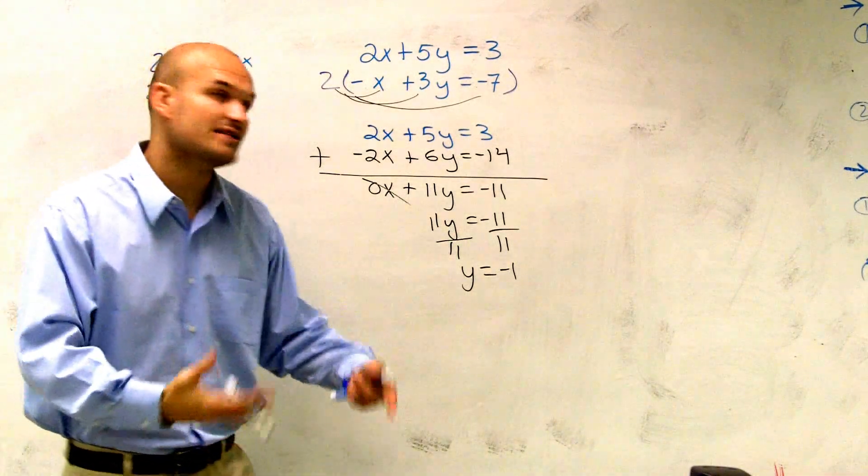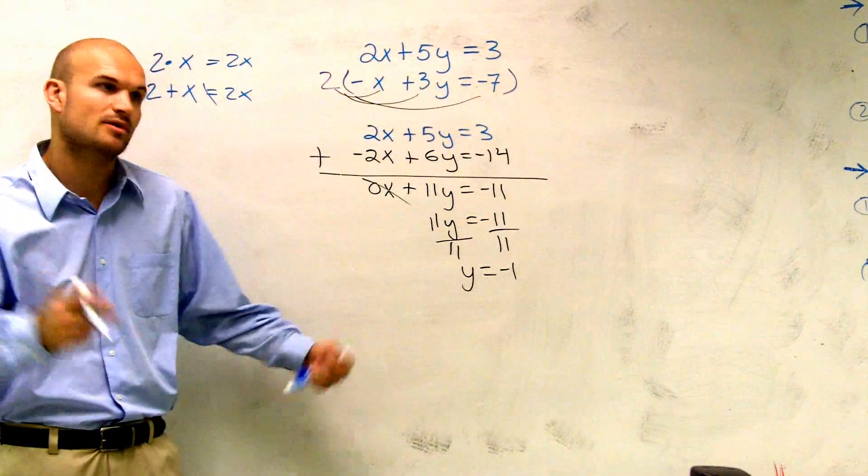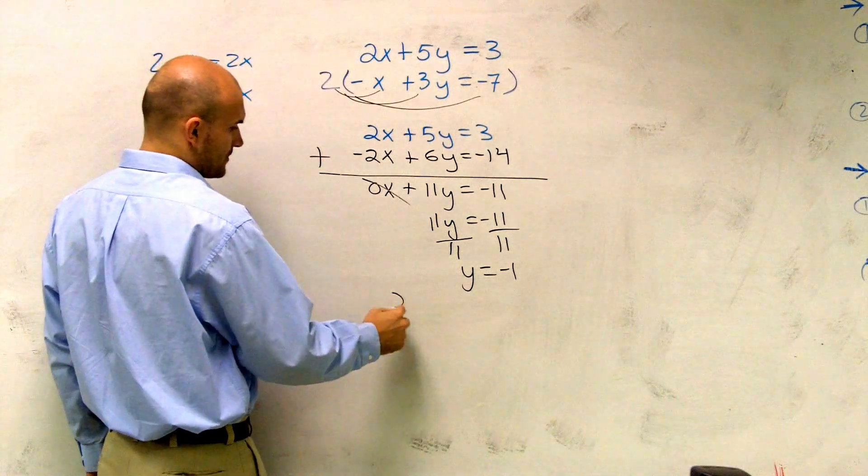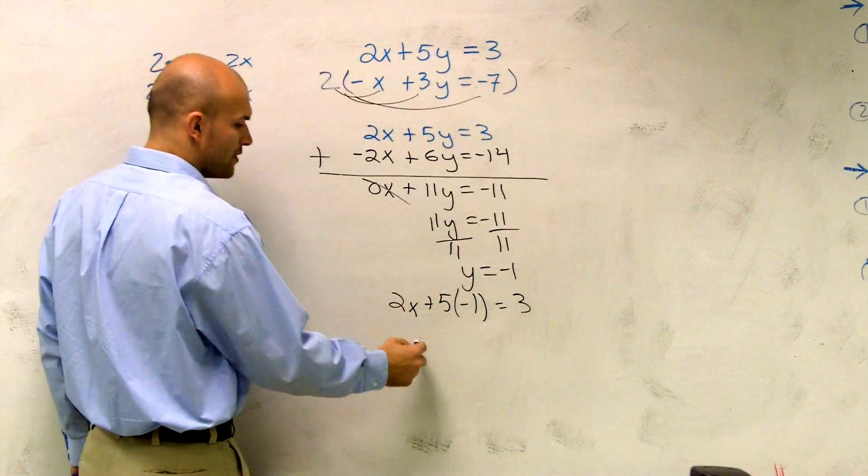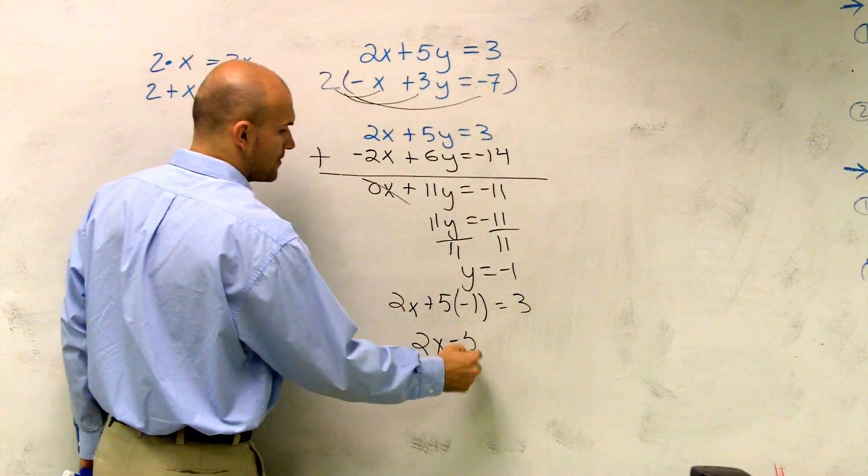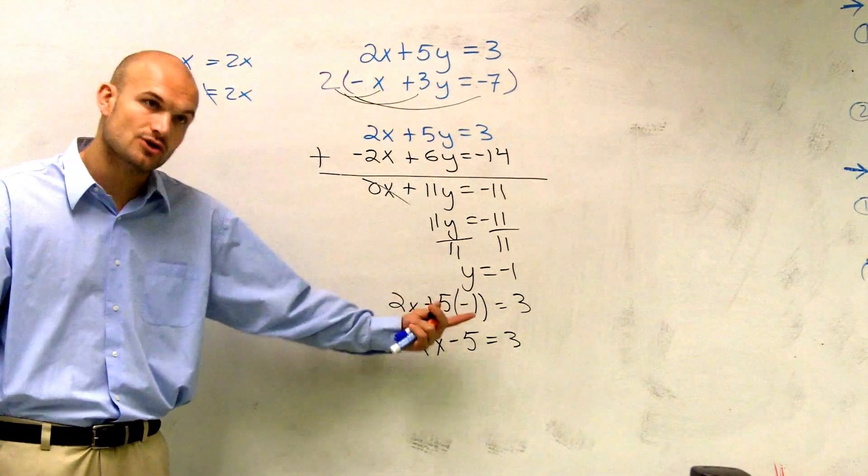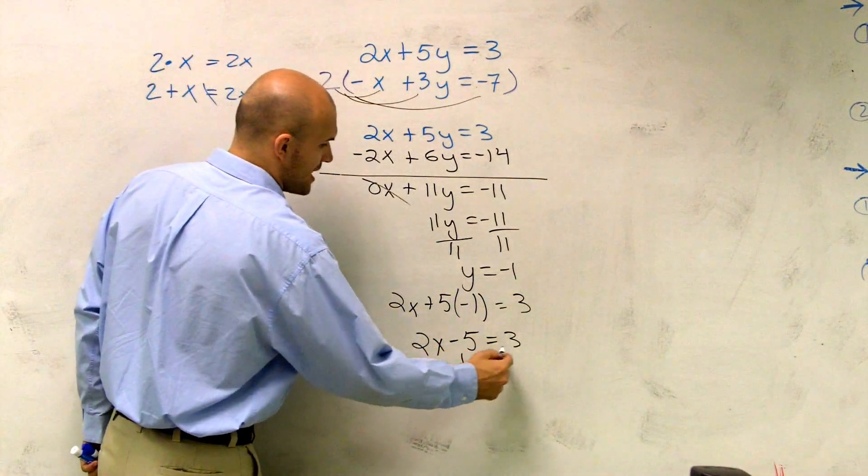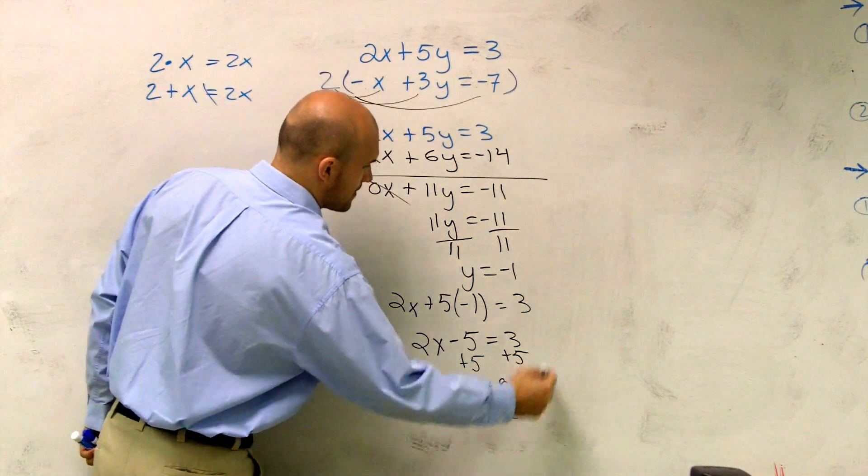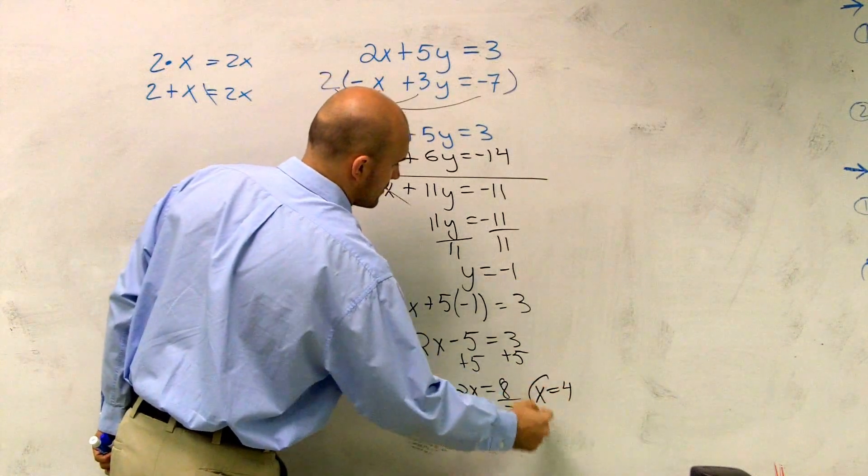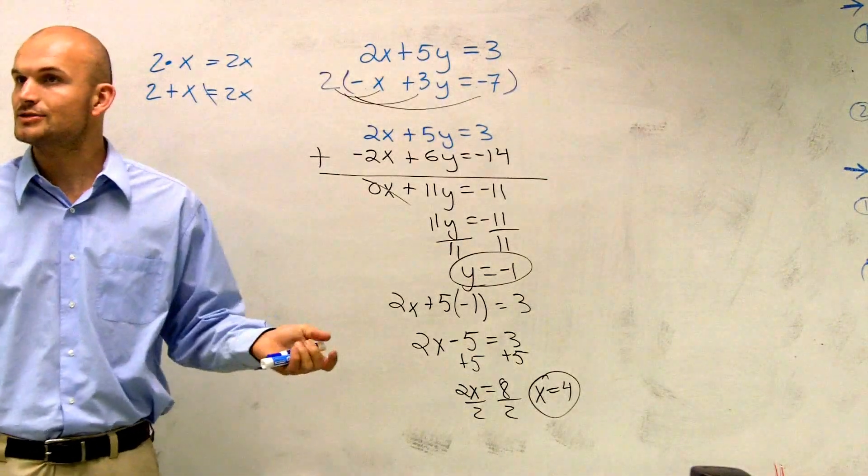However, now I know the value of y. To find the value of x, I need to plug my negative 1 in for one of my equations. It doesn't matter which one you want to plug it in for. Just plug it in for one. Top one? Okay, fine. So 2x plus 5 times negative 1 equals 3. 5 times negative 1 is negative 5. Now we're at a two-step equation. Now I need to solve for x. So I need to undo everything that's happening to my x. So I add my 5's. So I get x equals 4 and y equals negative 1. And there it is. That's your solution.